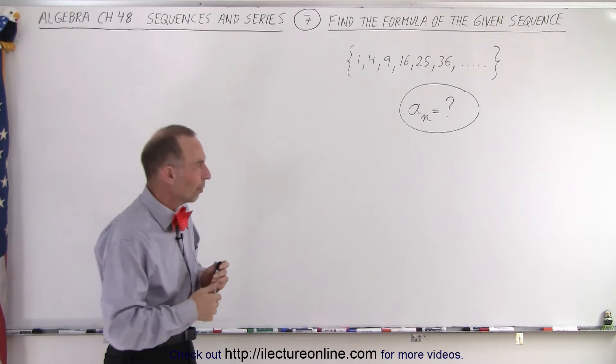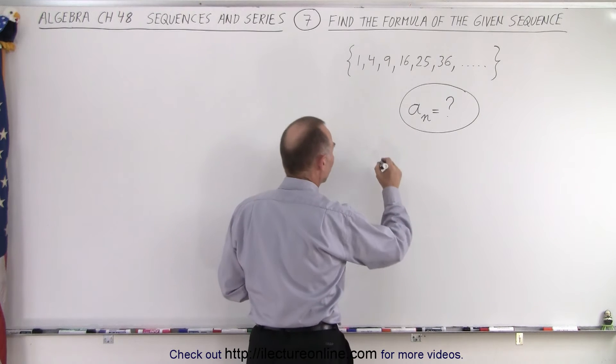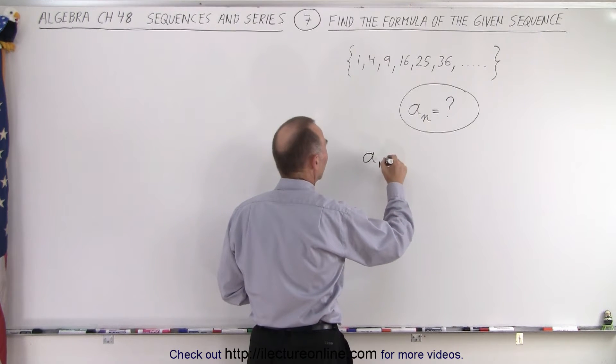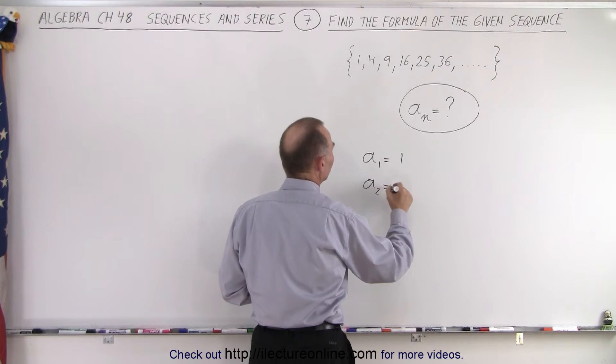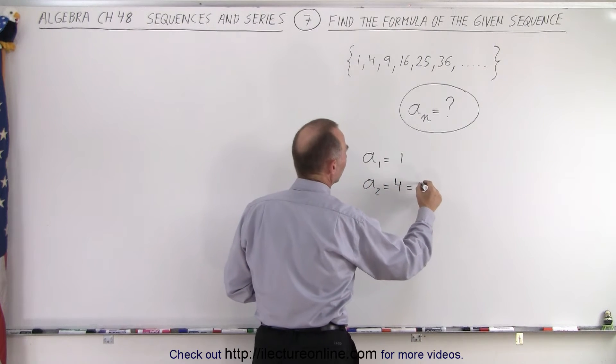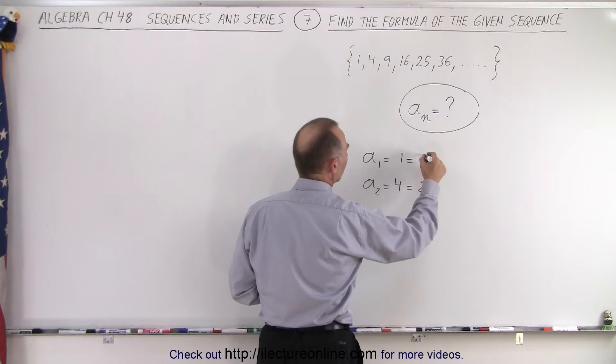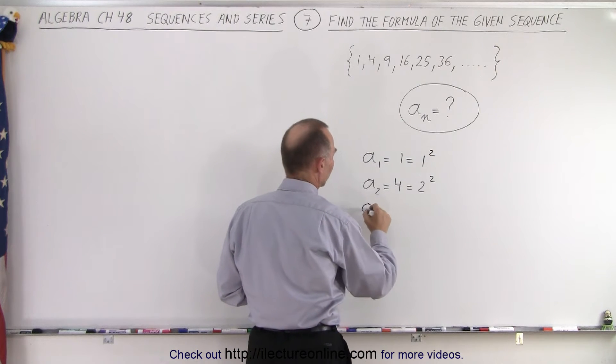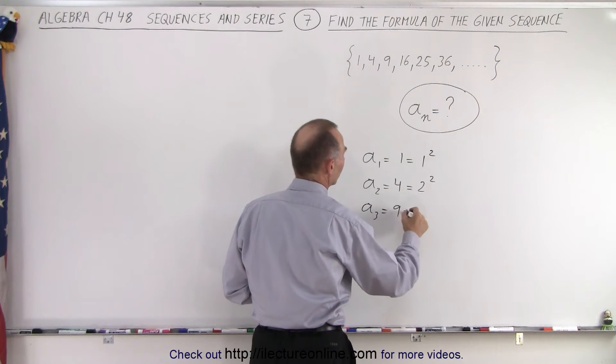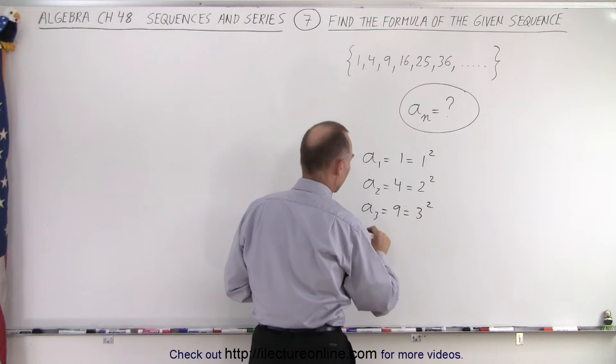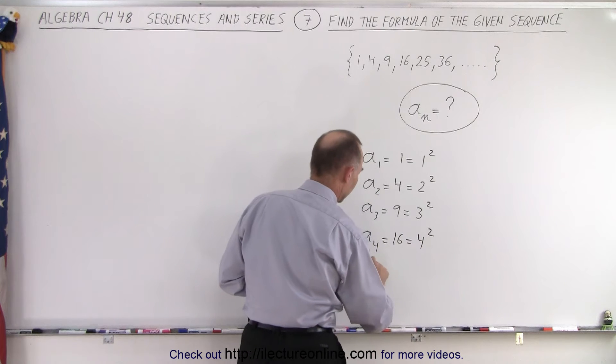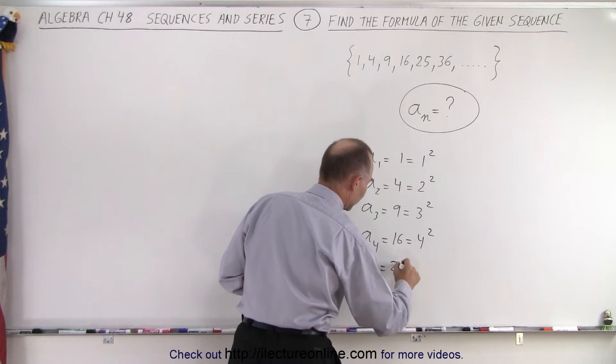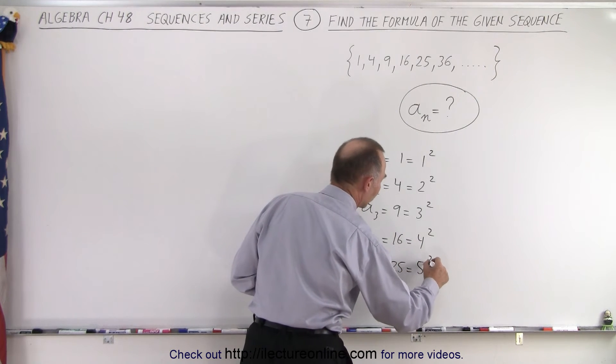So let's do it like this. This is the best way to do it. Let's write down each of the terms. a sub 1 is equal to 1, a sub 2 is equal to 4 but that can be written as 2 squared and this could be written as 1 squared because a sub 3 is equal to 9 which can be written as 3 squared and a sub 4 that is 16 which can be written as 4 squared. a sub 5 is equal to 25 which is equal to 5 squared.